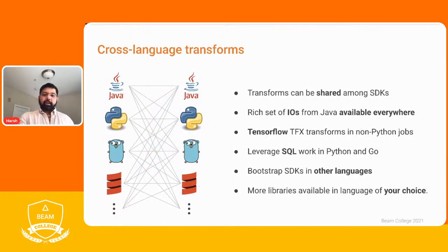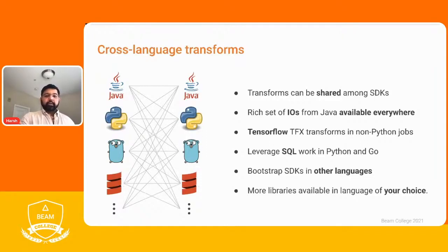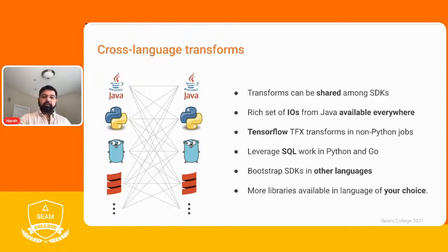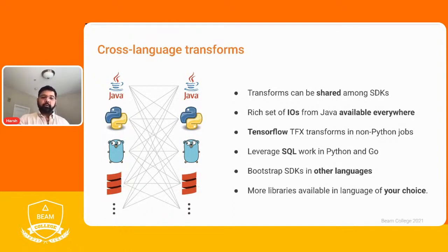With cross-language, transforms can be shared amongst all SDKs. Java SDKs can call machine learning Python transforms, and Python SDKs can have access to the rich set of IOs available in Java. We can leverage SQL in Python and Go, and we can even bootstrap SDKs in other languages. For example, Go is a new language and when it was being developed it didn't have the rich set of IO connectors available in Java. With cross-language transforms, Go has the ability to access all the connectors available in Java and Python. Python's connector set is also not as rich as Java's, so with cross-language we can use a much richer connector set.